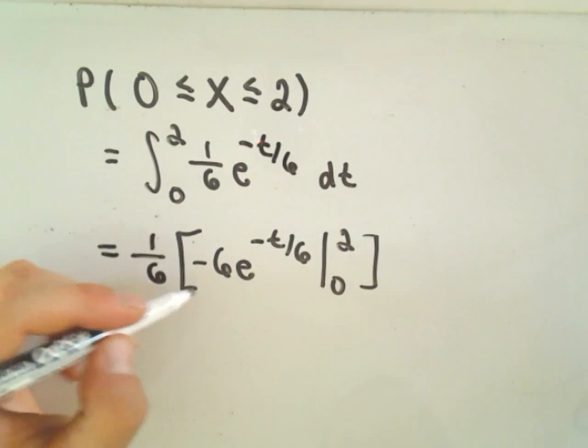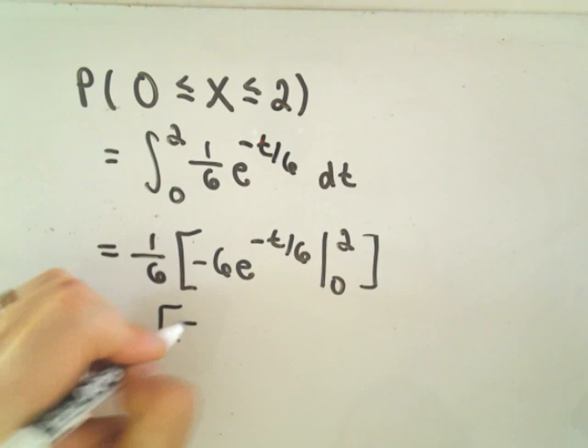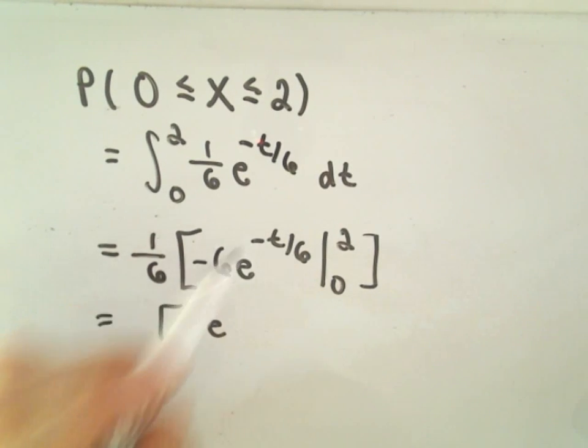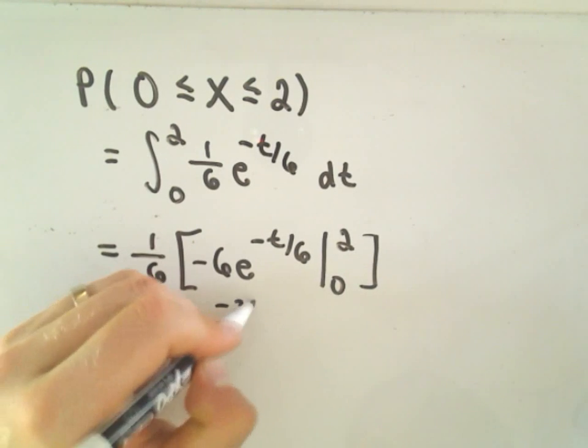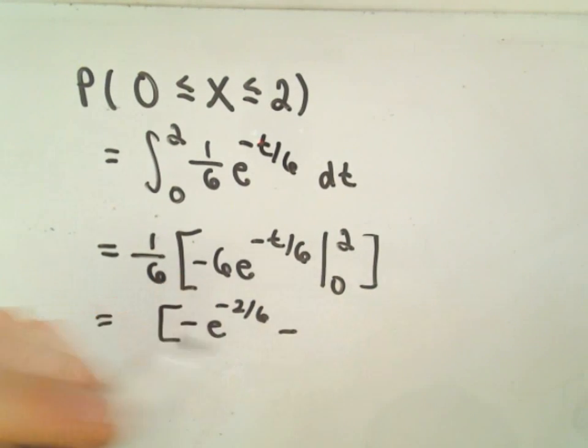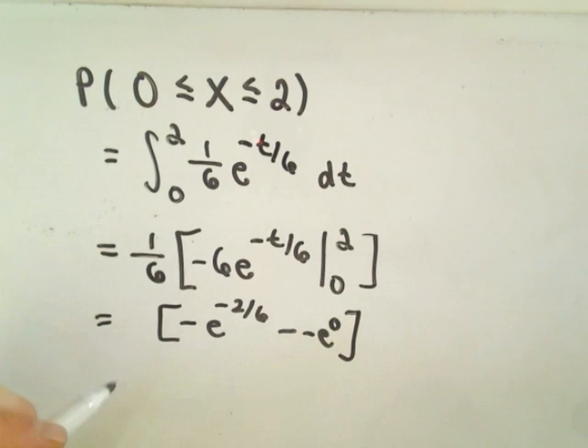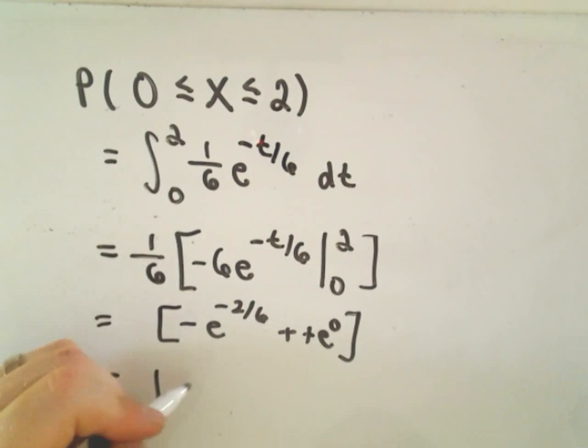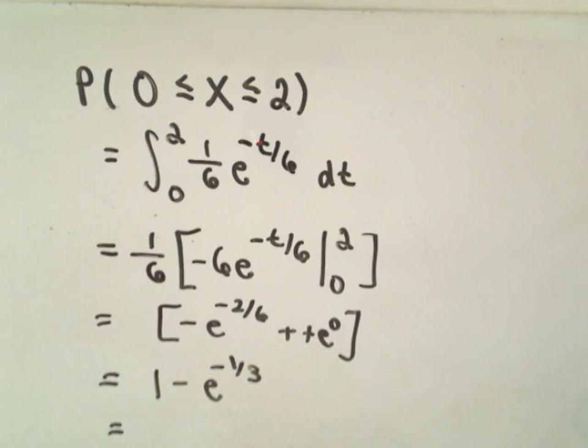So now it's just a matter of simplifying this down. So if I pull the six out, that'll cancel. I'll have negative e to the, let's see, it looks like we have to plug two in. So that'll give us negative two over six minus e, excuse me, negative e to the zero. So that's simply going to give us positive e to the zero. Or we'll be left with e to the negative one-third.